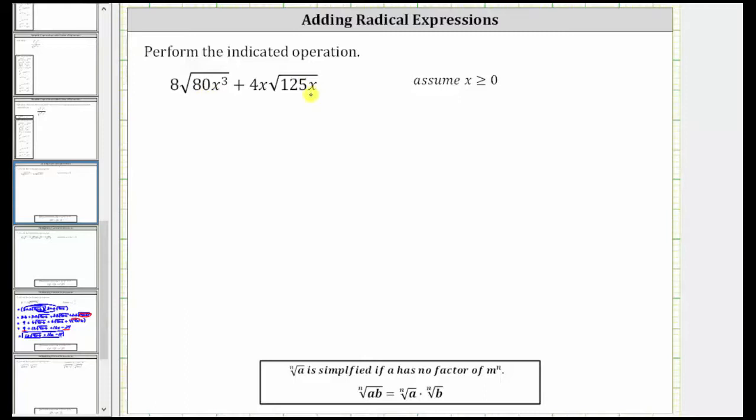We are asked to add two square root expressions. The first step is to simplify the two square roots. To help us simplify the first square root, let's determine the prime factorization of 80.